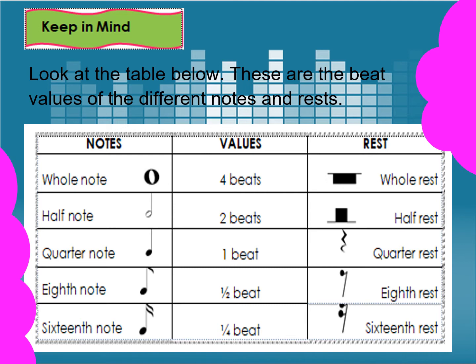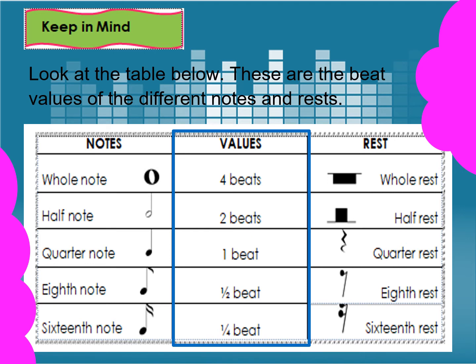Look at the table below. These are the beat values of the different notes and rests. The first column refers to notes: whole note, half note, quarter note, eighth note, and sixteenth note. Whole note has four beats, half note has two beats, quarter note has one beat, eighth note has one-half beat, and sixteenth note has one-fourth beat.